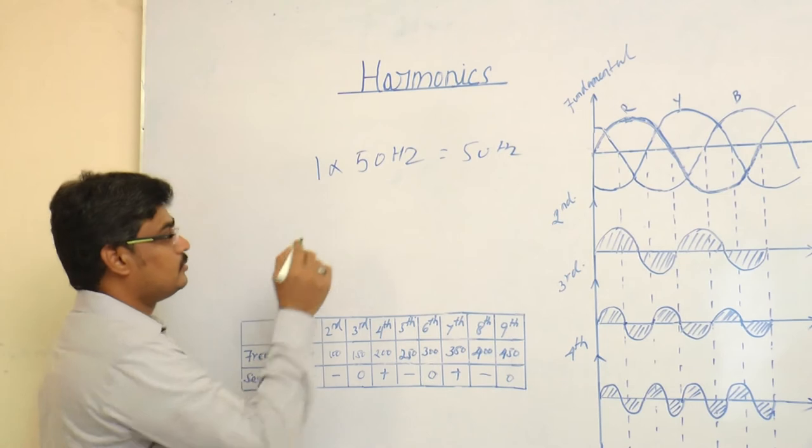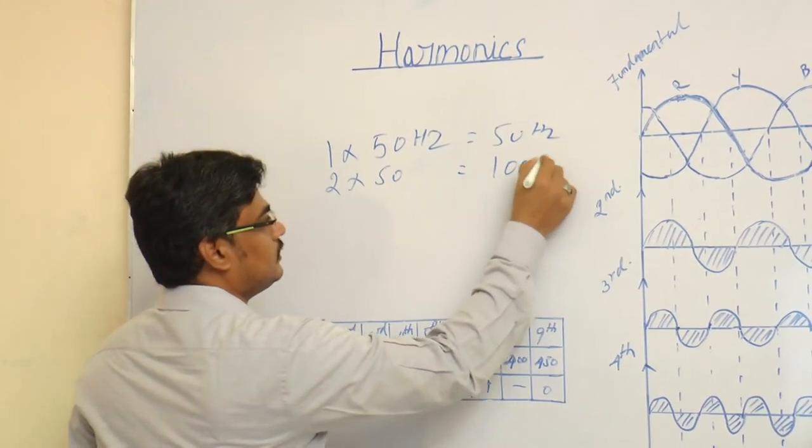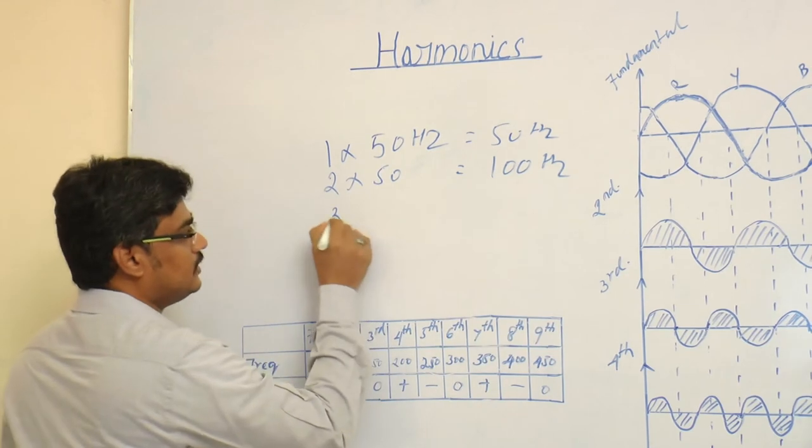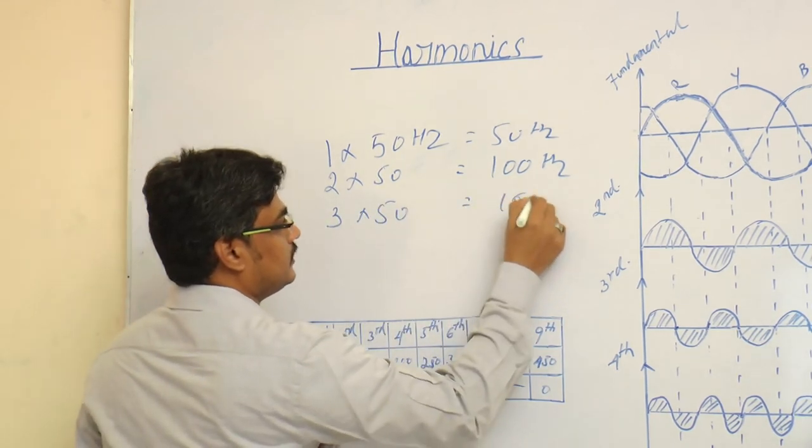For second order harmonics, 2 times 50 is 100 Hz. If it is third order harmonics, 3 times 50 is 150 Hz, and so on.